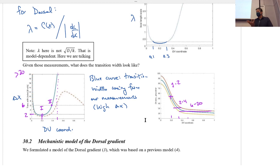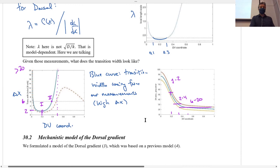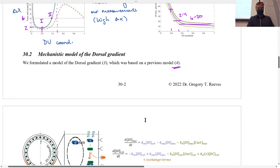So what do we do about this? Clearly our measurements are off in some way, or something is missing from this scenario. What we wanted to do was take the dorsal gradient, write down differential equations describing all the interactions we think are taking place in the system, and formulate a model of the dorsal gradient based on a previous model.